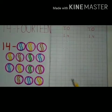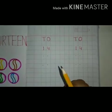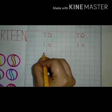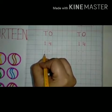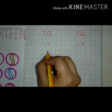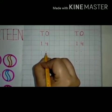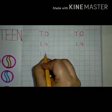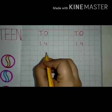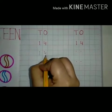So let's start. To write the number 14, first we will write 1 here. Start at the top and do a straight line down. After this we will write 4 here. We will start at the top and do a line down to the middle. Then we will do a straight line across. Then move up to the top and do a straight line down.